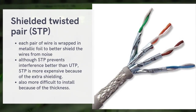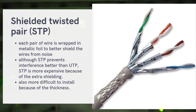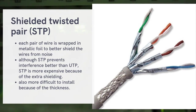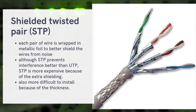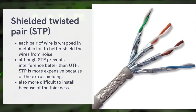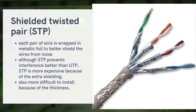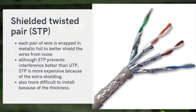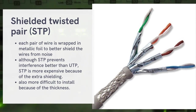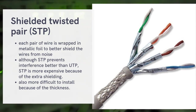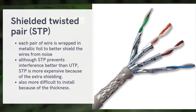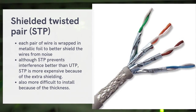The other type of twisted pair is STP, or Shielded Twisted Pair. Similar to UTP, but each pair of wires is wrapped in a metallic foil for better noise reduction. This means interference avoidance is higher compared to UTP. However, it is more difficult to install, more expensive, and the wire is thicker and stiffer, making it harder to bend, so it is less commonly used in LAN.